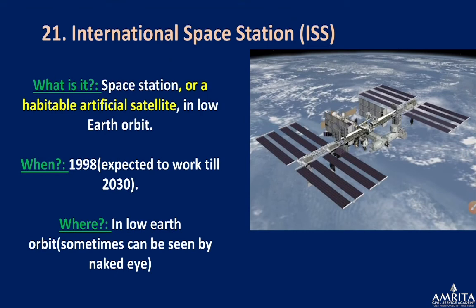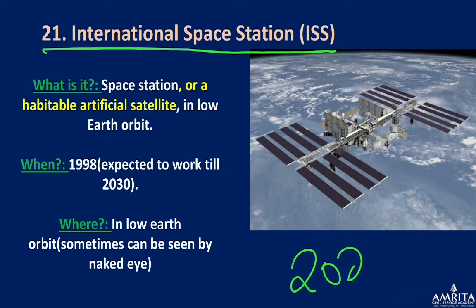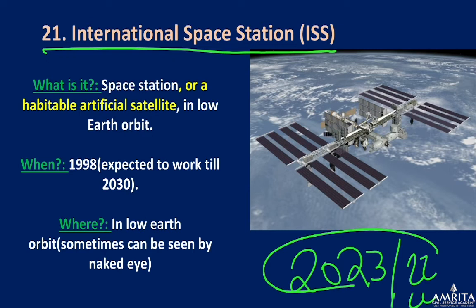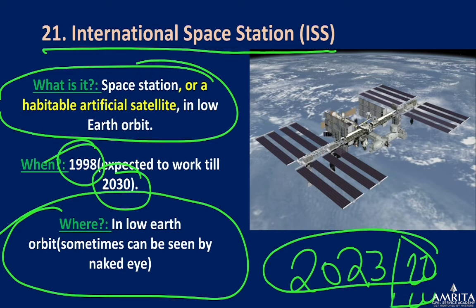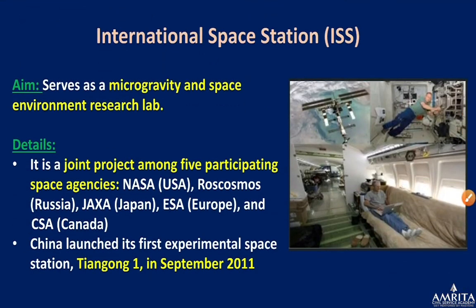International Space Station (ISS): It is a habitable artificial satellite in low Earth orbit, operational since 1998 and expected to continue until 2030. India has decided to have its own space station by 2022–2023. In many places around the world, the ISS can be observed with the naked eye at particular times of day.